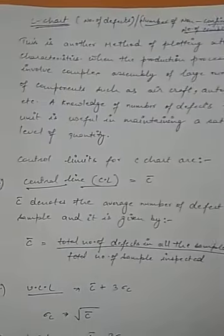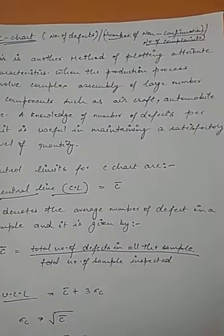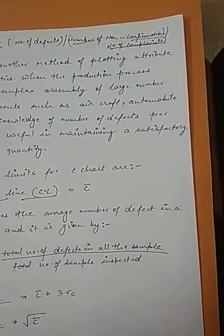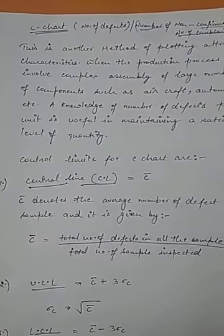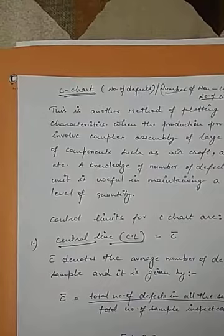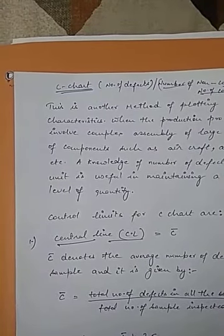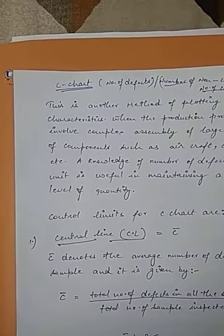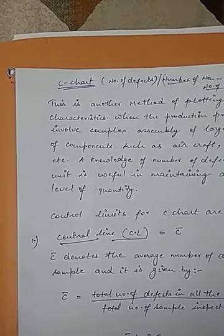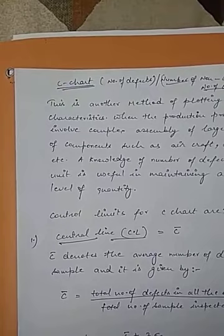In such cases, knowledge of number of defects per unit is useful in maintaining a satisfactory level of quality. Basically, C-charts are used where generally data is given in the form of number of defects or number of defectors.